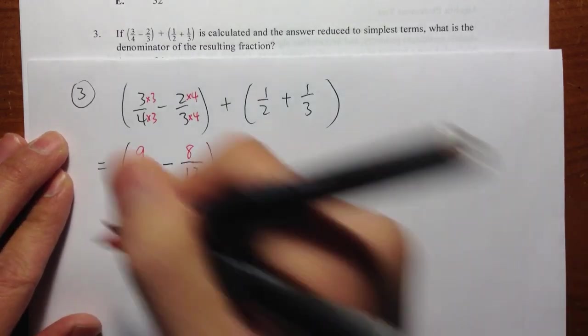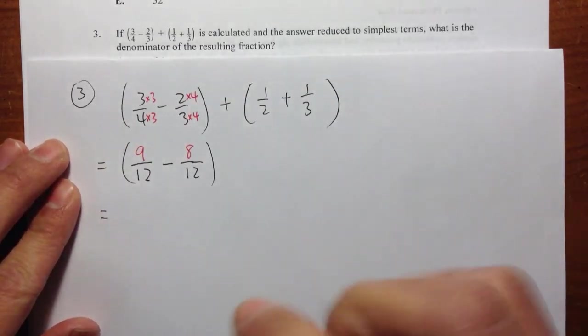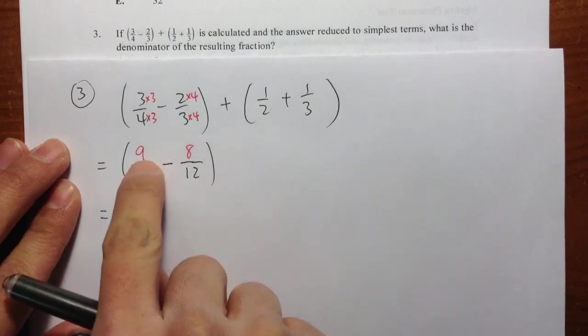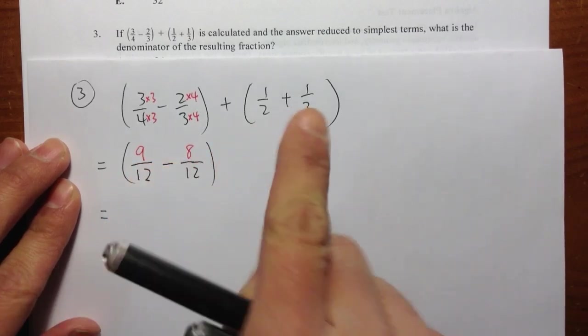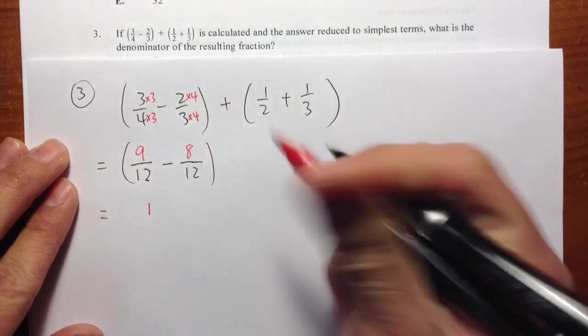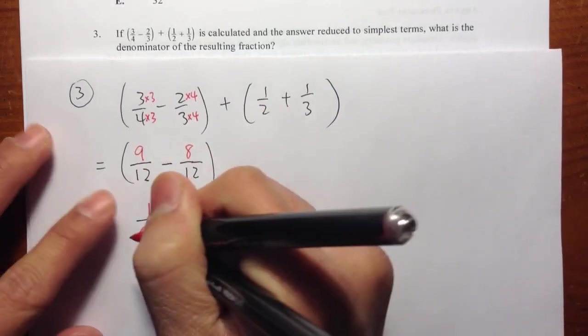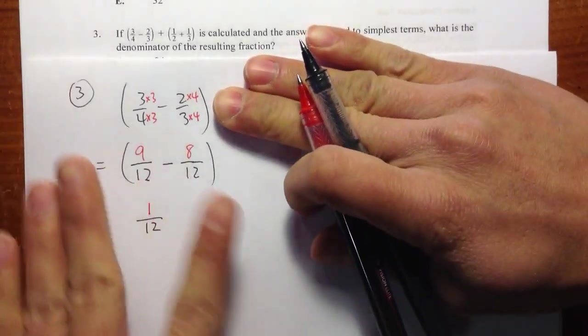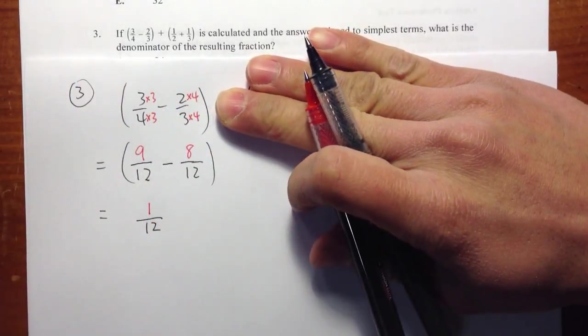So within the first parentheses, once we have the same denominator, this turns out to be just 9 minus 8, which is 1 over 12. Once on the top, and the denominator 12 stays the same. But notice that I am just doing the first part. This is just my first part of the question.